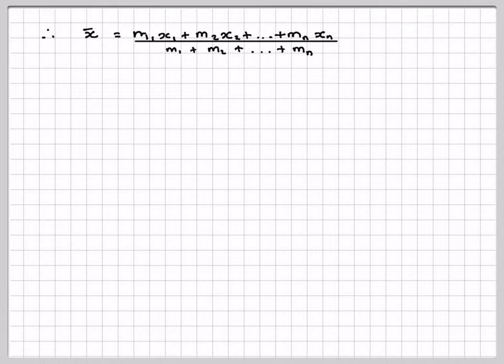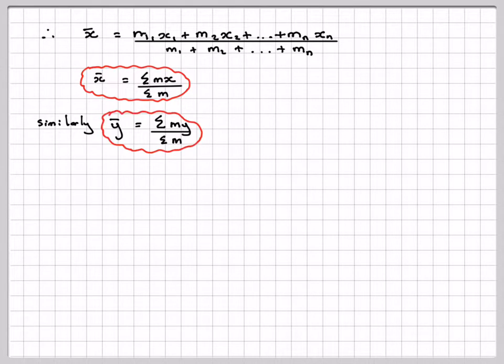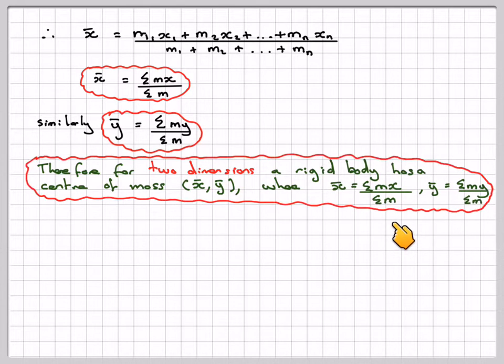That will give me the x coordinate for a two-dimensional object. That can be written as the sum of the masses times x, each of them individually, divided by the sum of m. And similarly for the y coordinate, y bar is the sum of my divided by the sum of m. You can do the same thing with a vertical axis. Therefore, for a two-dimensional rigid body, the center of mass x bar, y bar is given by x bar equals the sum of mx over the sum of m, and y bar is the sum of my divided by the sum of m. So now we know how to find the center of mass.